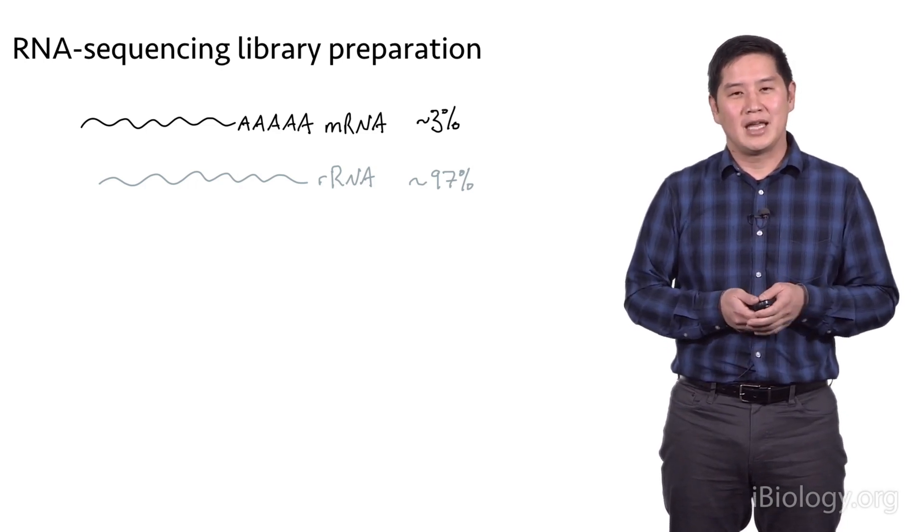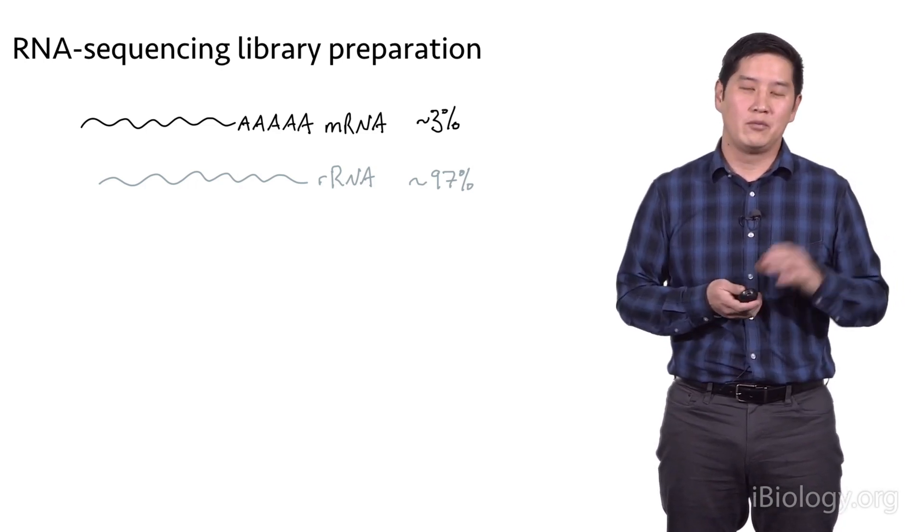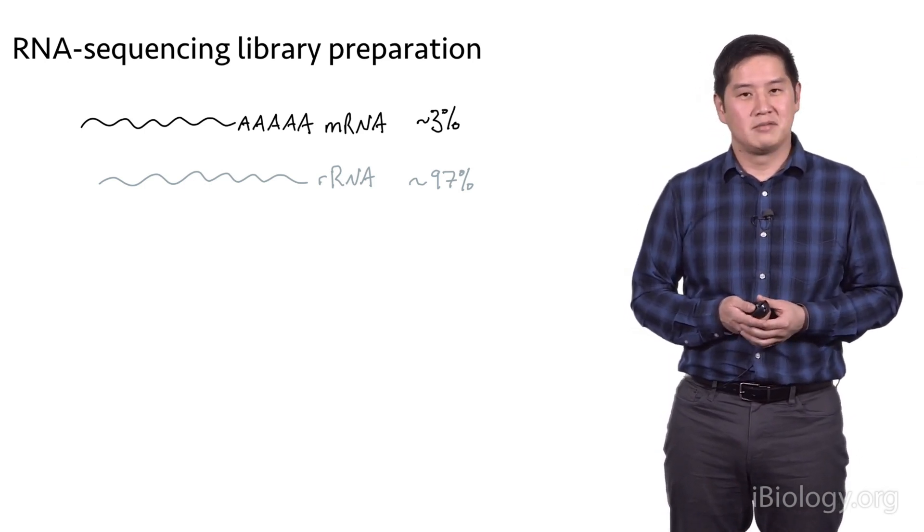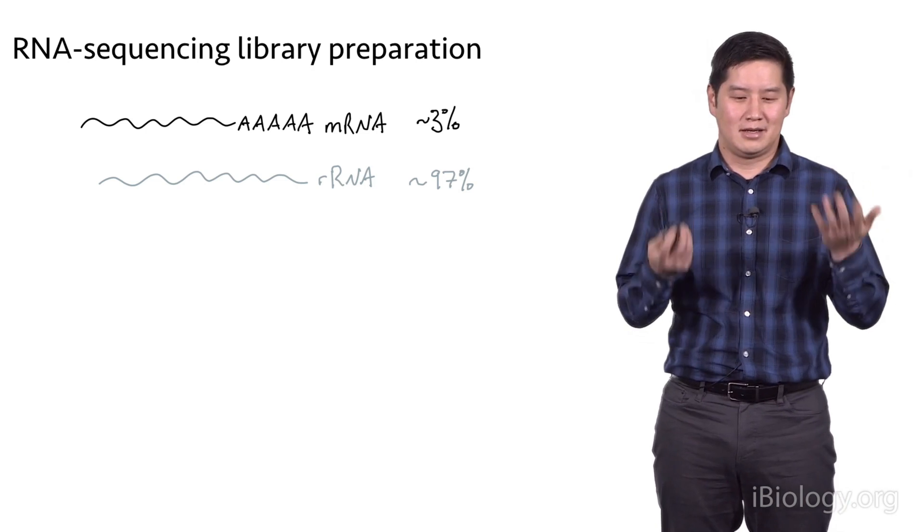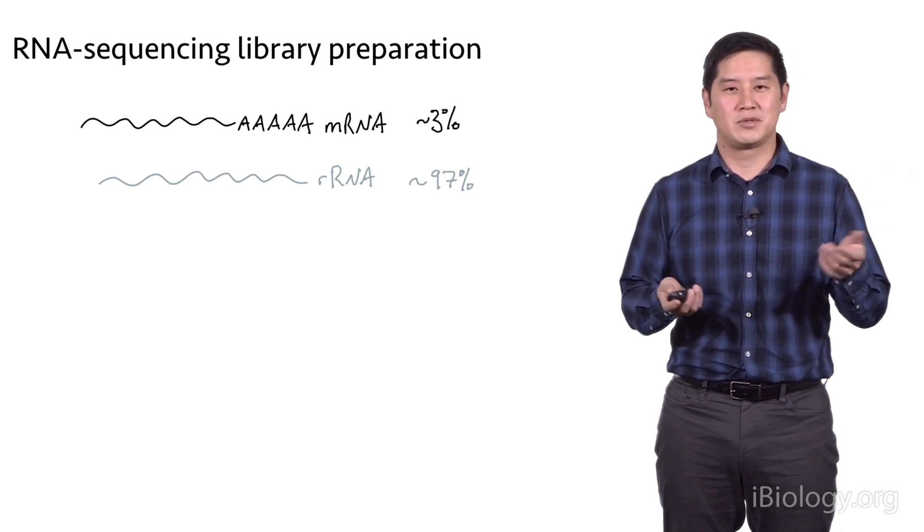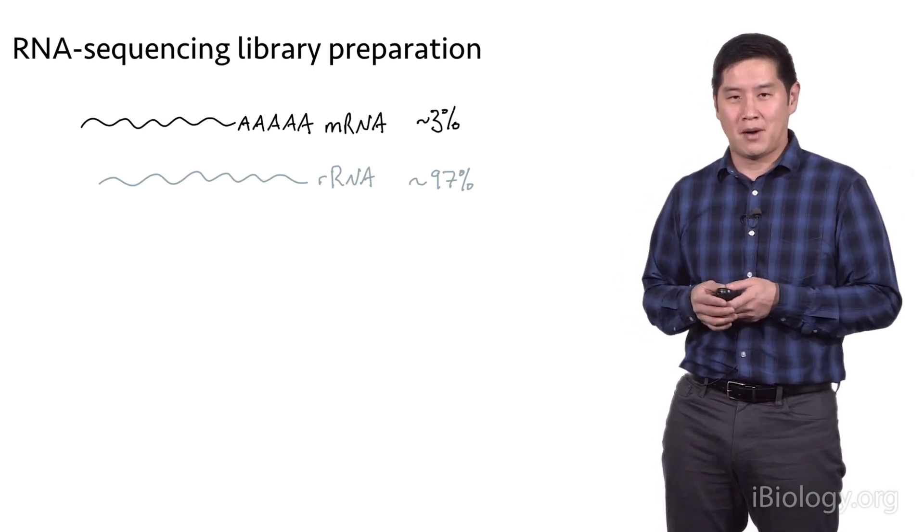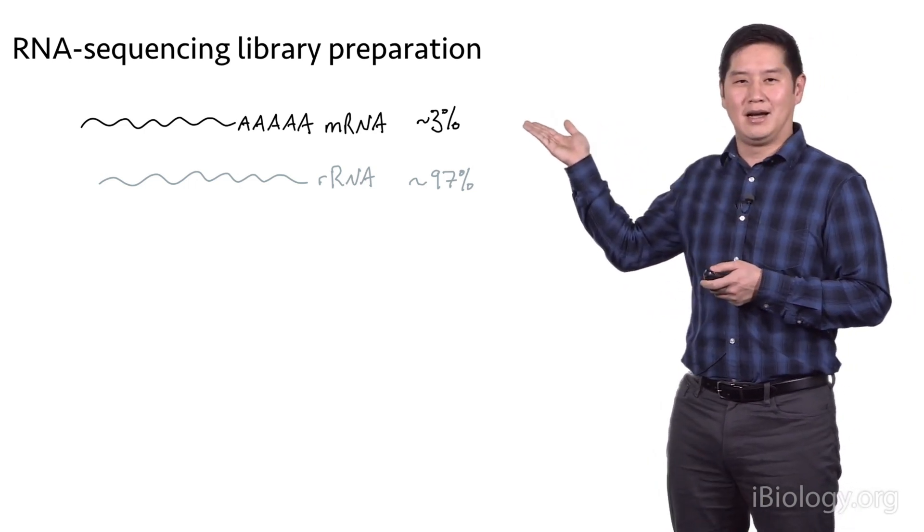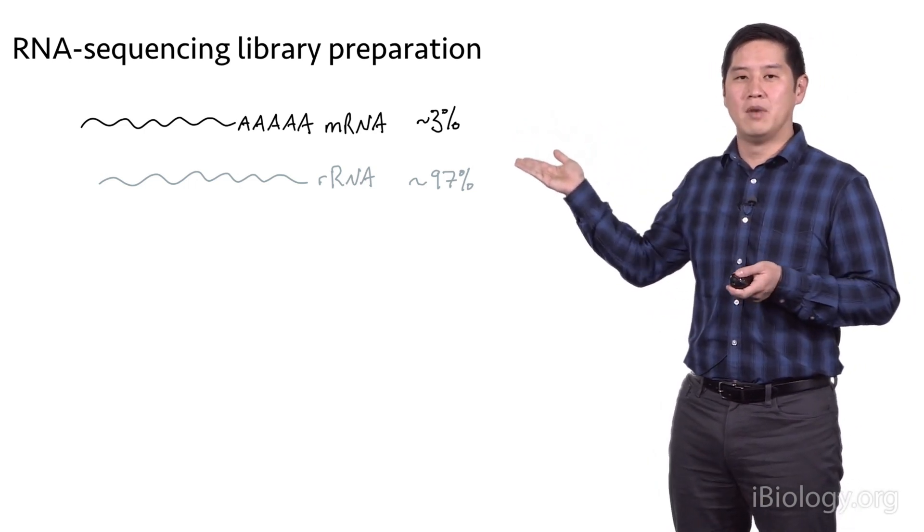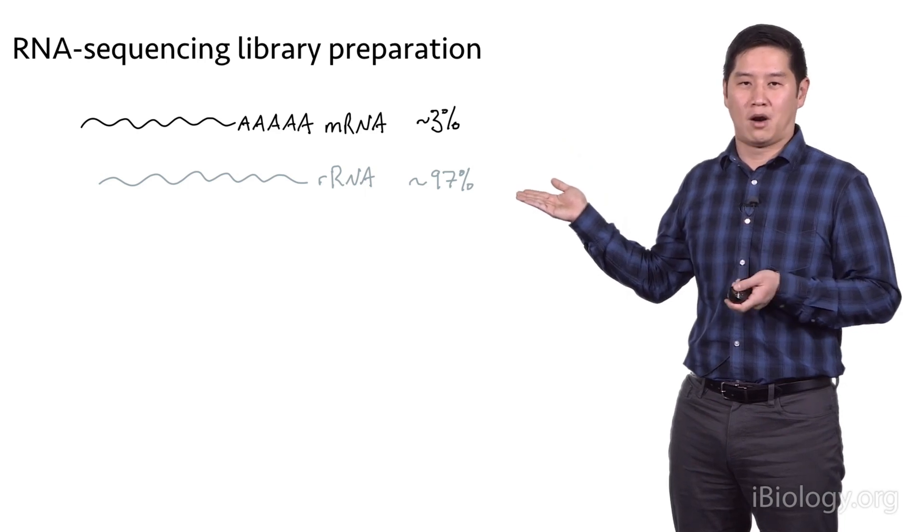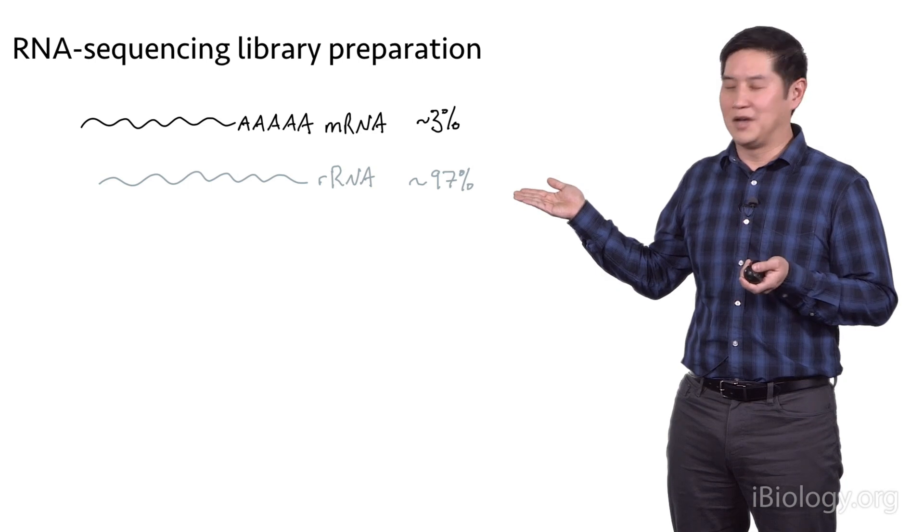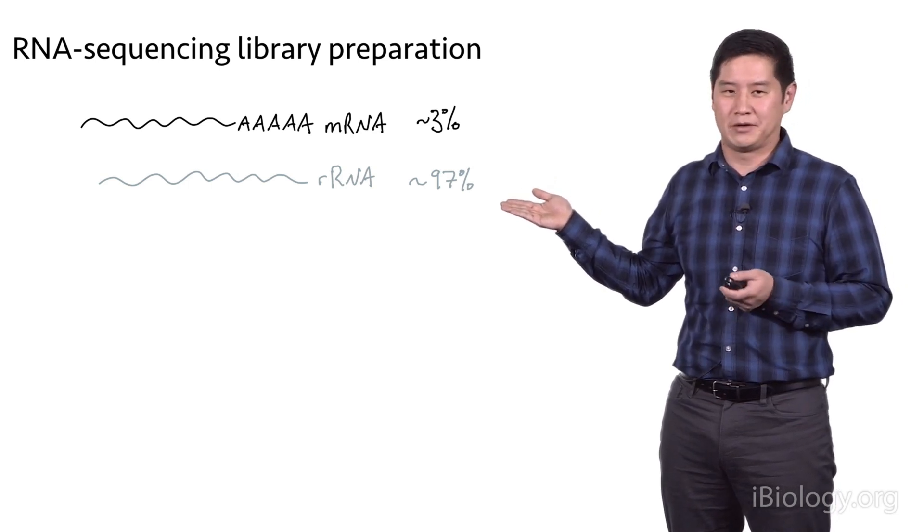This is usually done to look at gene expression, to identify which genes are turned on or off in a given sample. Most of the time people are interested in the protein-coding transcripts or messenger RNAs. These are polyadenylated transcripts, but they only make up a small portion of the total RNA. Most of the RNA is ribosomal RNA, which is generally undesirable and people don't want to waste their sequencing dollars on it.